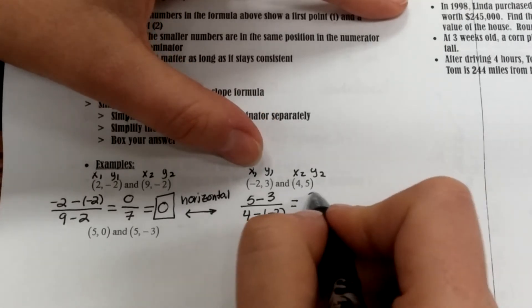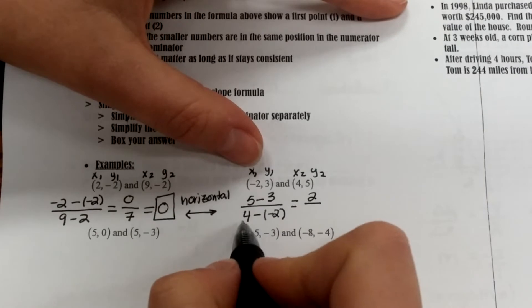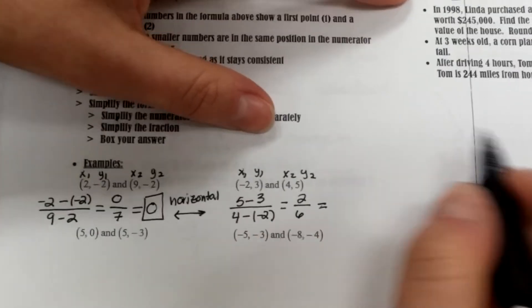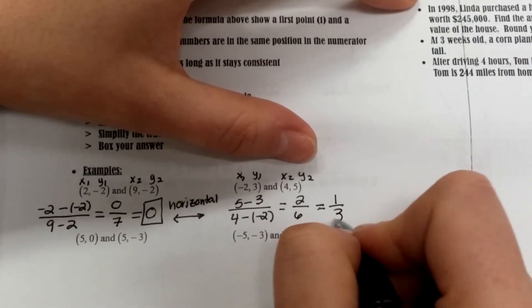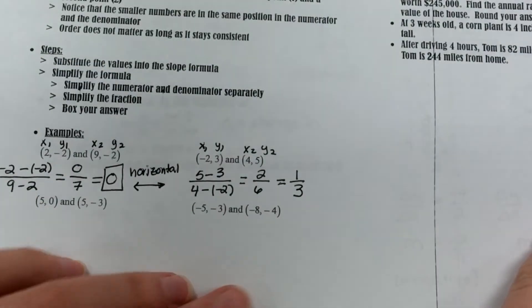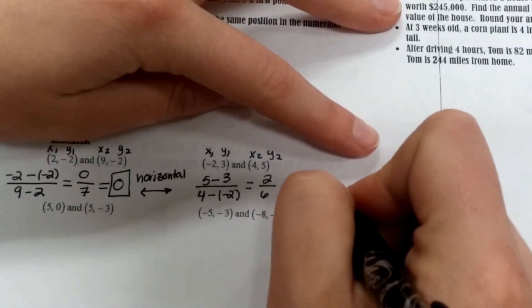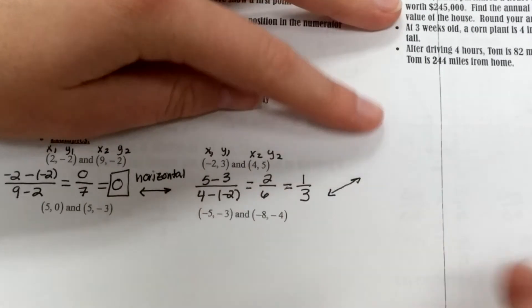So 5 minus 3 gives me 2, over 4 minus a negative 2 becomes 4 plus 2, which is 6. And if I simplify that, it's going to be 1 third. So this particular line, if I were to plot those two points, it would have a positive slope. So it would look something like that going upwards.